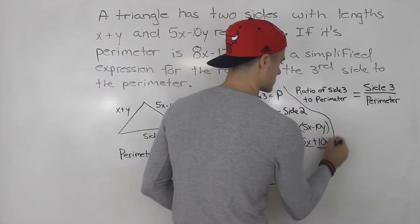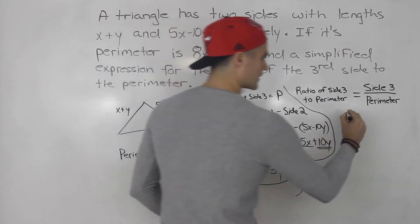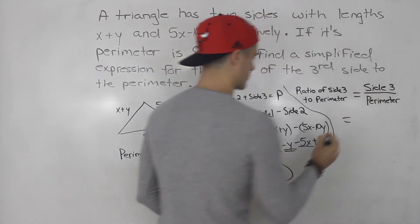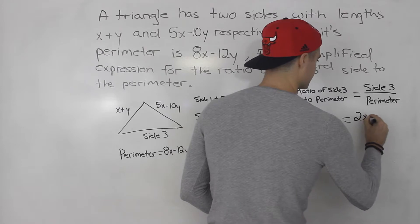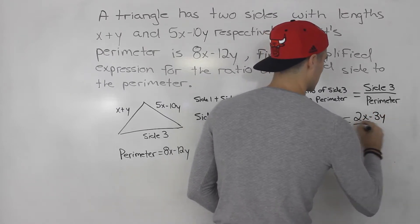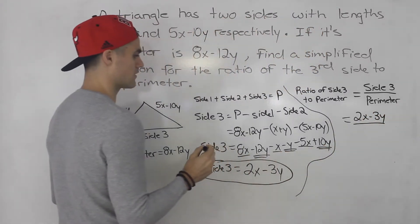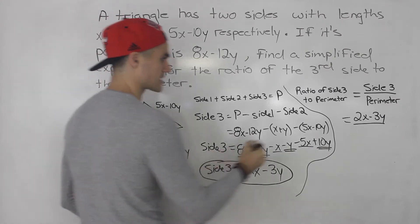So going to here, so this is kind of split up. Side 3 is 2x minus 3y, and then the perimeter is 8x minus 12y.